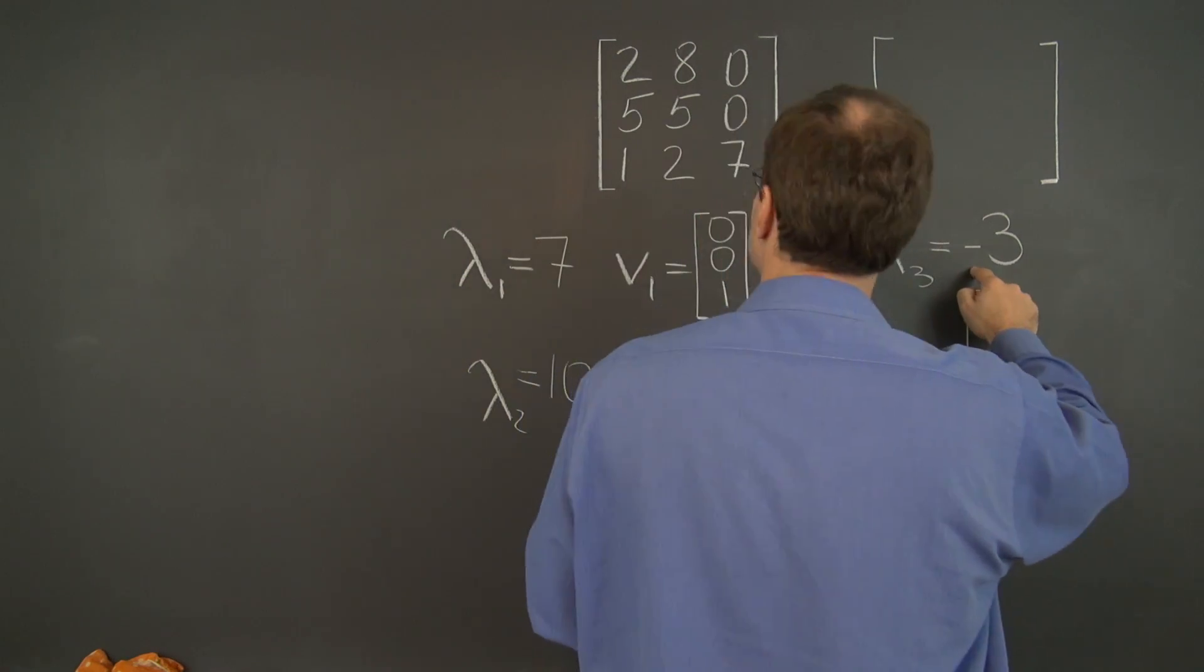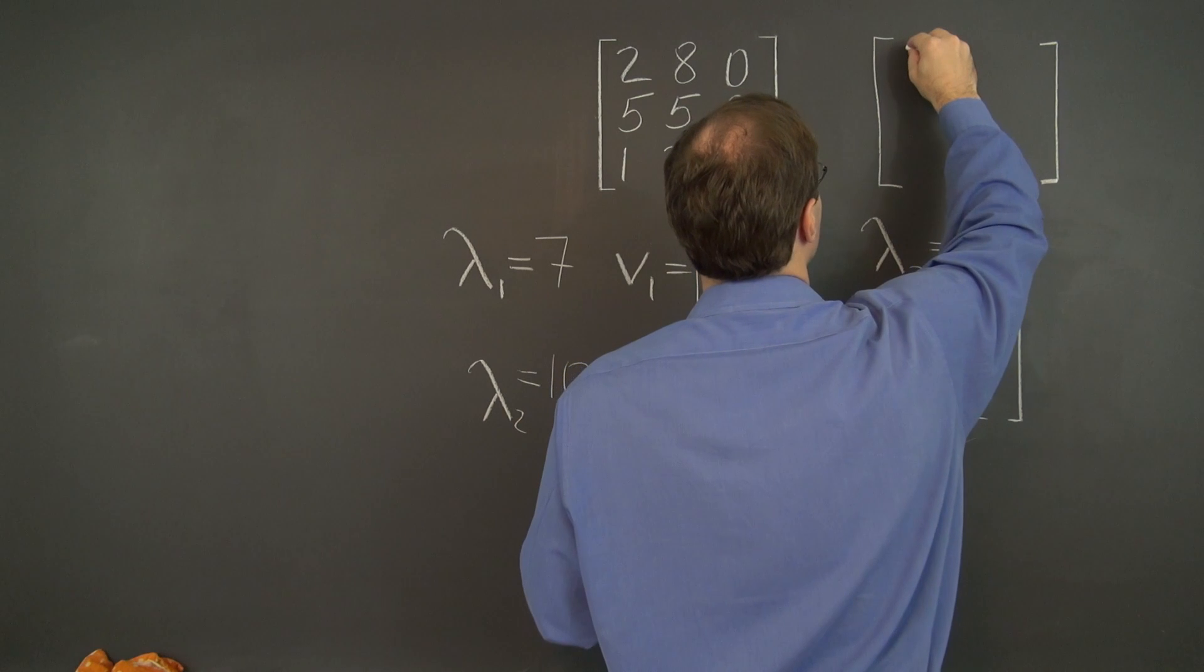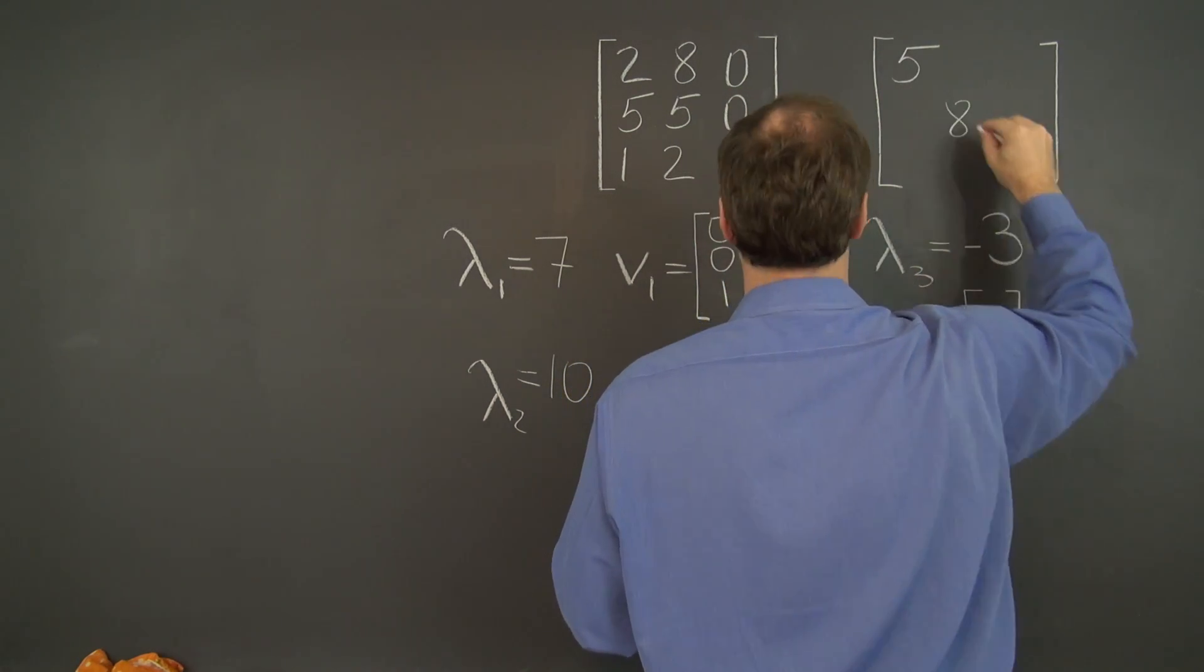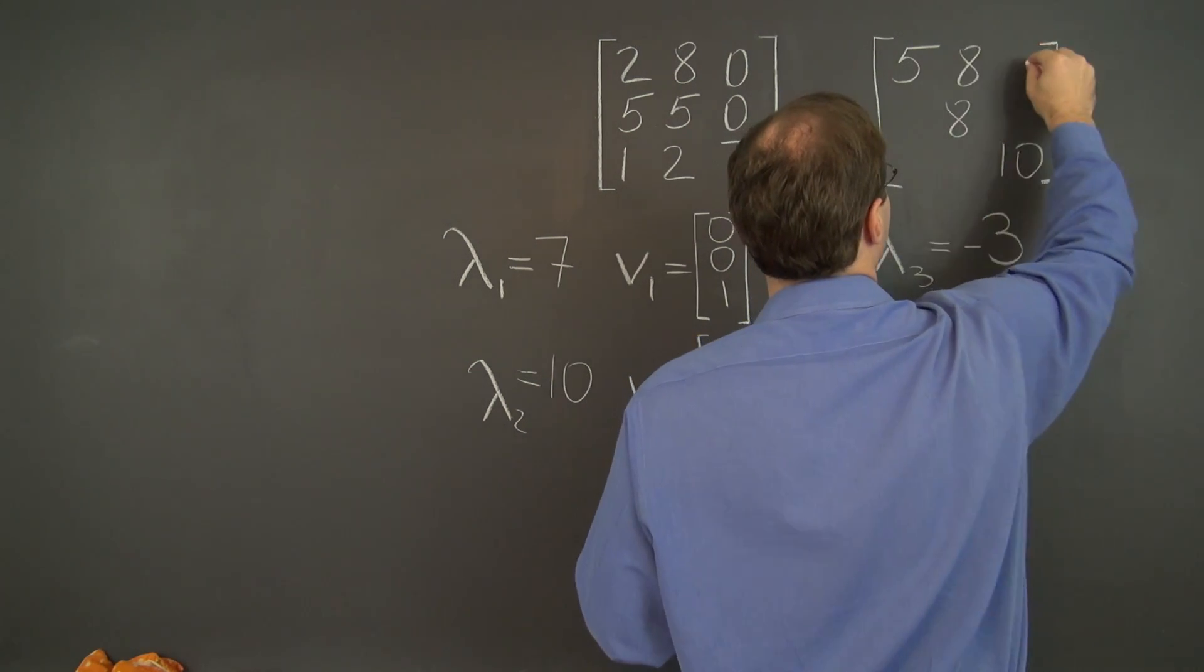So subtracting negative 3 is the same as adding 3, so we're left with 5, 8, 10, and the remaining entries are the same.